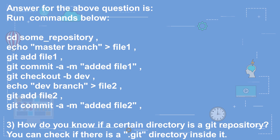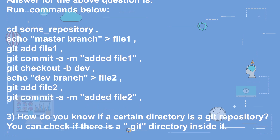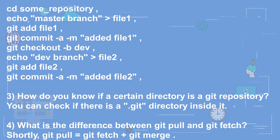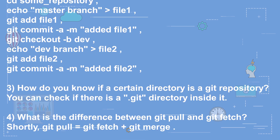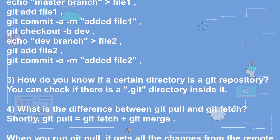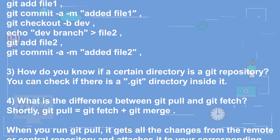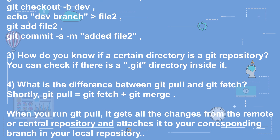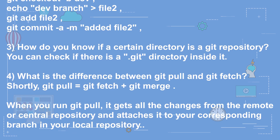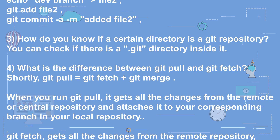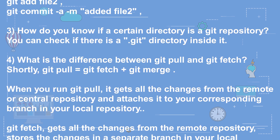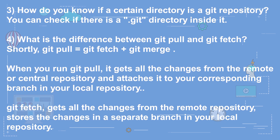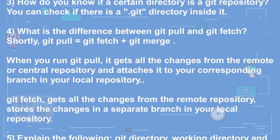Question 4: What is the difference between git pull and git fetch? In short, git pull equals git fetch plus git merge. When you run git pull, it gets all the changes from the remote or central repository and attaches them to your corresponding branch in your local repository. Git fetch gets all the changes from the remote repository and stores them in a separate branch in your local repository.